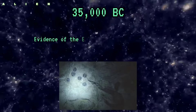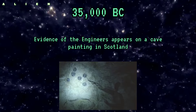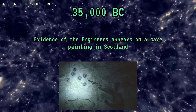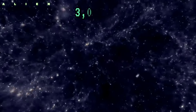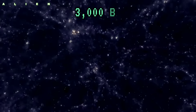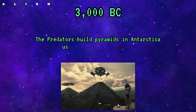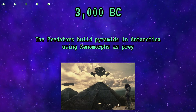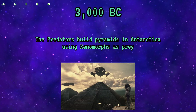35,000 BC: Evidence of the Engineers appears on a cave painting in Scotland. 3000 BC: The Predators build pyramids in Antarctica using Xenomorphs as their prey.